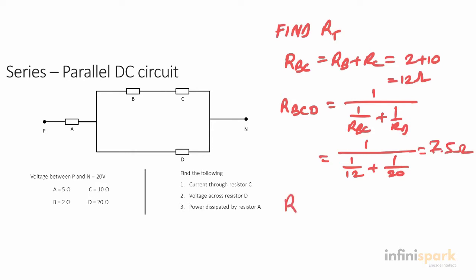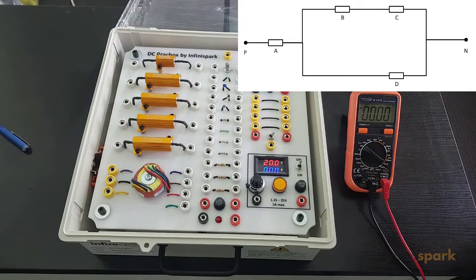Then we can find RT, which is just RA plus RBCD because they're in series. That is 5 plus 7.5, giving us 12.5 ohms. So that's our RT. Now let's wire our circuit.